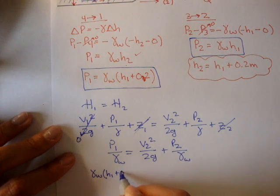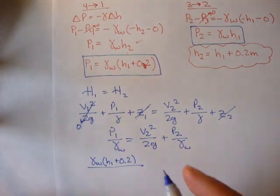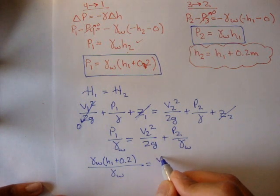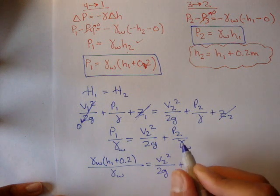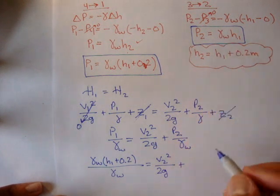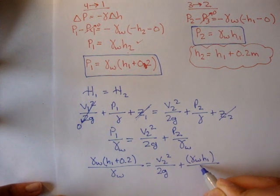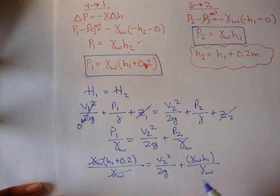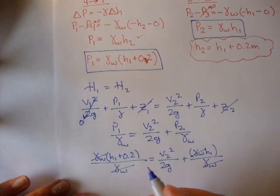P1 is gamma of water, h1 plus 0.2 over gamma of water is equal to v2 squared over 2g plus pressure at two, which is gamma of water times h1 over gamma of water.